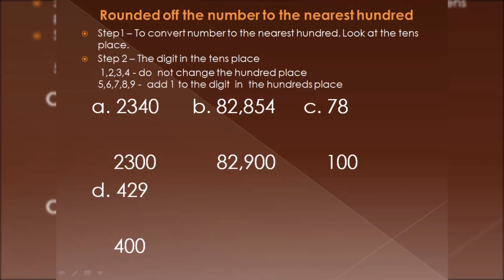Now let's look at rounding a number to the nearest hundred. We concentrate only on the hundreds place. To round to the nearest hundred, look at the tens place. If the digit in the tens place is 1, 2, 3, or 4, we do not change the hundreds place. If the digit in the tens place is 5, 6, 7, 8, or 9, we add one to the hundreds place.